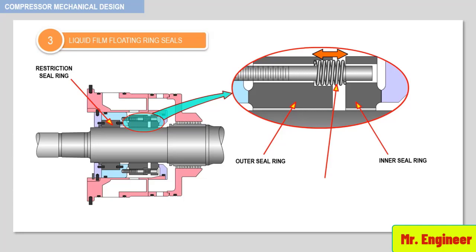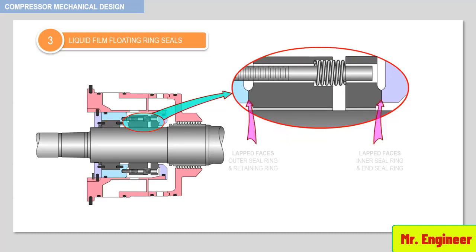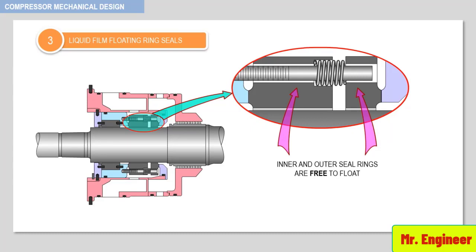The inner and outer seal rings are held apart by compression springs. This maintains the lapped faces of the inner and outer seal rings in contact with the end seal plate and retaining ring, respectively. The inner and outer seal rings are free to float, and are therefore called floating rings, free to align radially to accommodate any shaft vibrations, as depicted in this simplified animation.